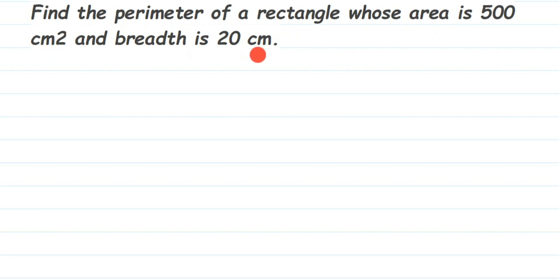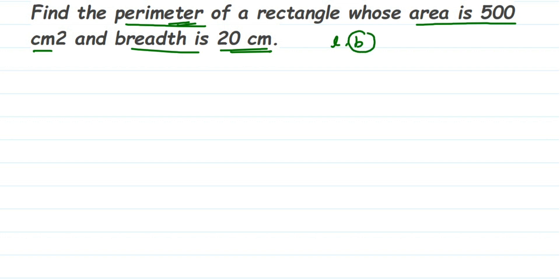We are asked to find the perimeter of a rectangle. To find the perimeter, we need both sides — length and breadth. The question gives us the area (500 cm²) and the breadth (20 cm), but we still need the length. So we'll use the area to find the length first, and then use length and breadth together to find the perimeter.